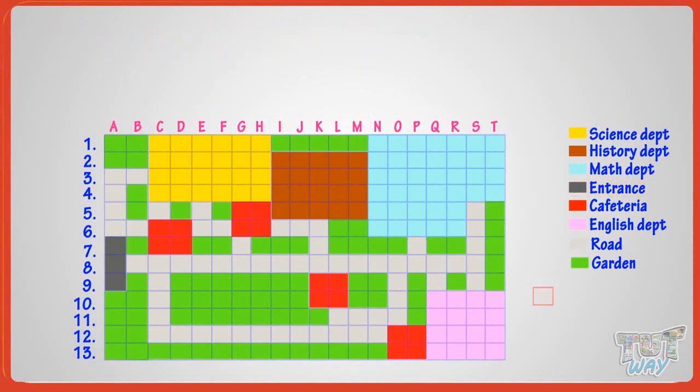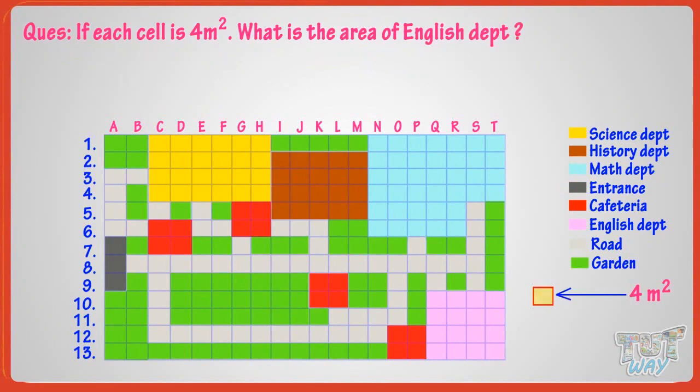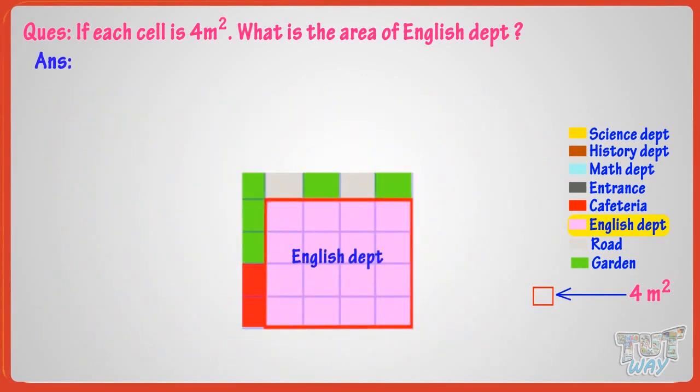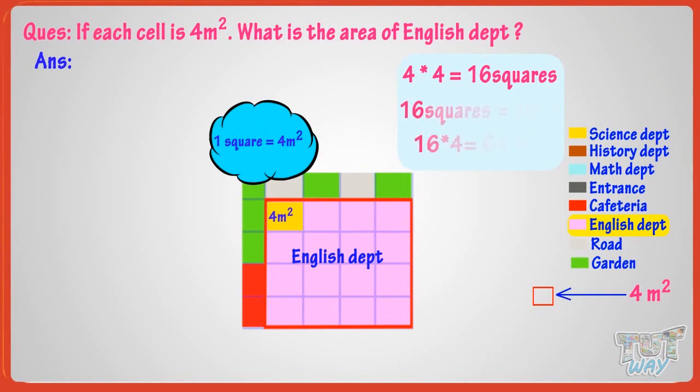If each cell is 4 meters square, what is the area of English department? Let's find it out. English department is the area in pink. Pink area spans 4 rows of 4 squares each. So 4 multiplied by 4 equals 16 squares. And 1 square equals 4 meters square. So 16 square equals 4 multiplied by 16 equals 64. So area of English department equals 64 meters square.